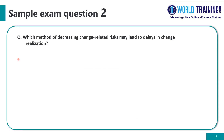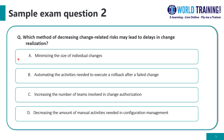Question number two: which method of decreasing change-related risks may lead to delays in change realization? Option A: minimizing the size of individual changes. Option B: automating the activities needed to execute a rollback after a failed change. Option C: increasing the number of teams involved in change authorization. Option D: decreasing the amount of manual activities needed in configuration management. We need to pick the one which will create a delay, meaning the other three options would speed things up.